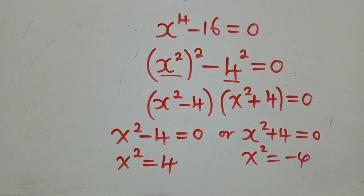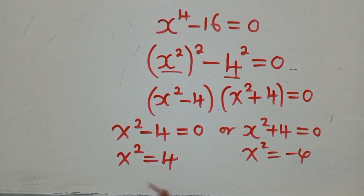At this point, we now find square root, square root both sides. So, X will simply be equal to positive or negative 2.